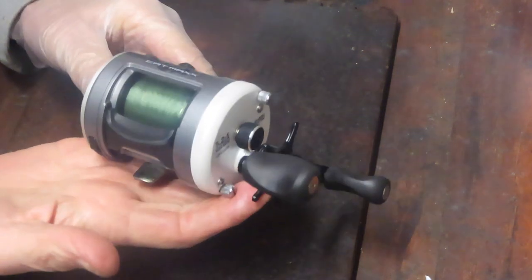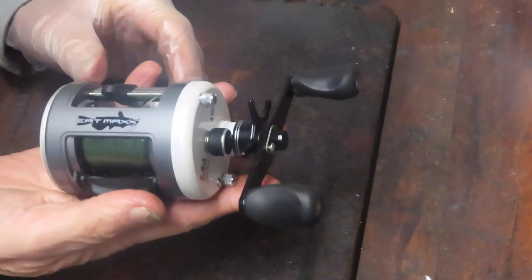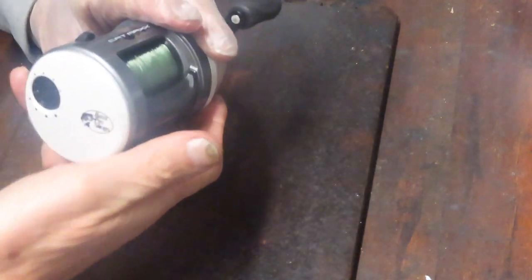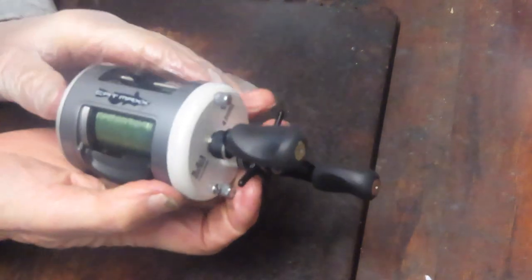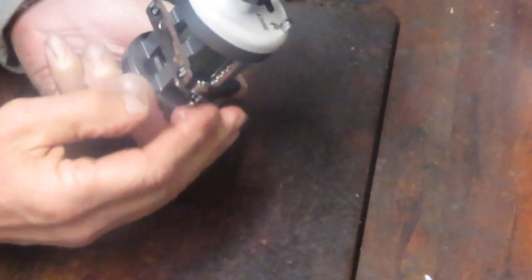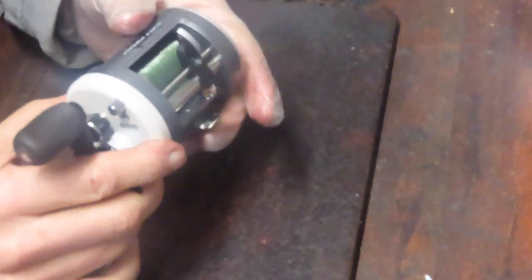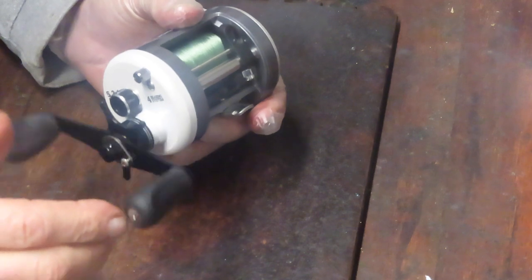It's a nice looking reel, kind of the size of a Shimano Calcutta. This one happens to be a Bass Pro reel, a Bass Pro Cat Max. No indication who makes it other than it's made in China. I don't know the manufacturer.